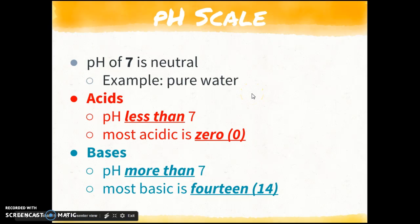pH of 7 is going to be neutral, and this example would be pure water. This is going to be not your tap water. It'll be like your distilled water. Acids are anything with a pH less than 7. So 6.9 is technically an acid, and the most acidic is 0. So the further away you get from the center of the pH scale, the more acidic it is to the left. For bases, the more you get to the right, the more basic it is. So the most basic is 14.